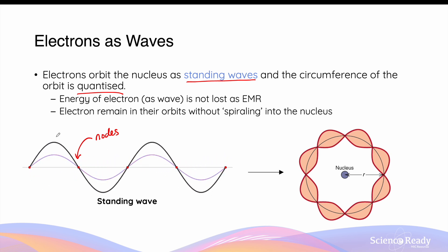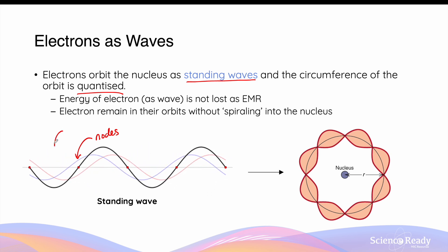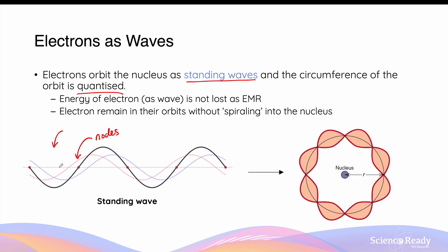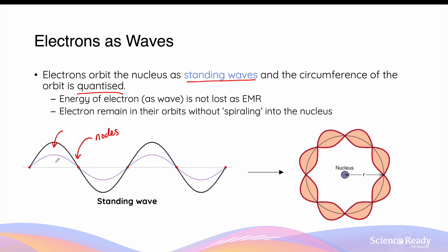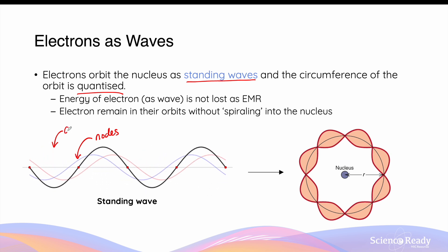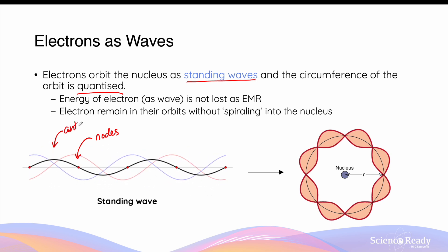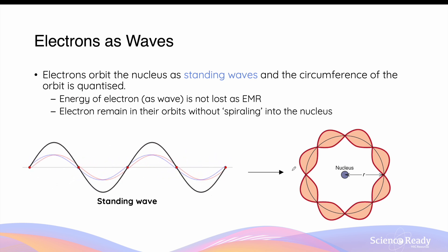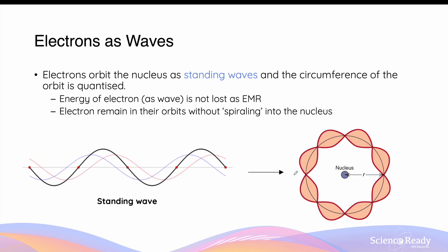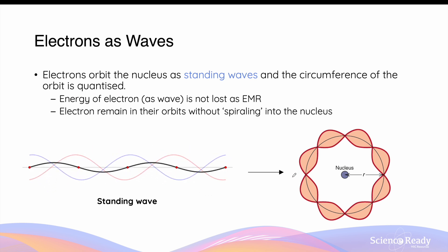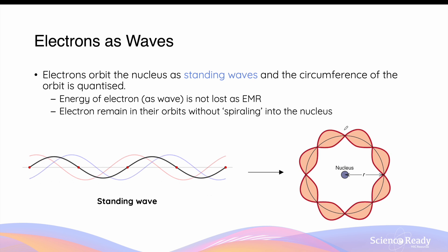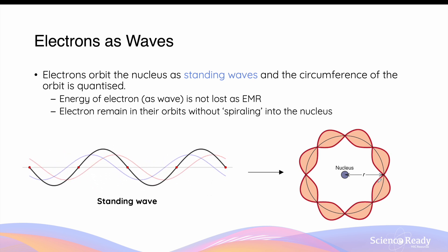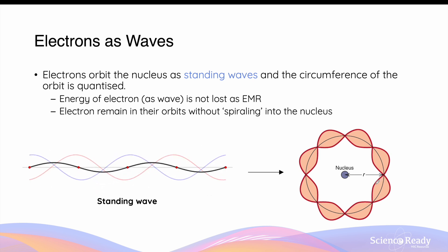Positions at which there is maximum displacement of oscillation — in other words, where the amplitudes occur — are known as the antinodes of the standing wave. De Broglie explained that atomic electrons should be understood as standing waves around the orbit rather than as particles.